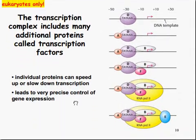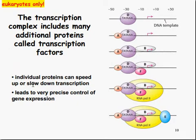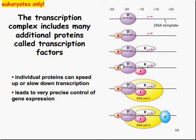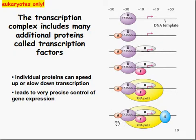Additionally, still in eukaryotes only, the transcription complex includes many additional proteins called transcription factors. Individual proteins can speed up or slow down transcription, leading to very precise control of gene expression. This particular region of transcription requires additional proteins like B, F, RNA polymerase 2, and the E protein in order for that particular sequence to be initiated.